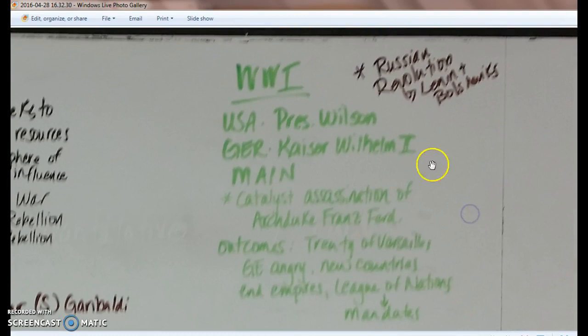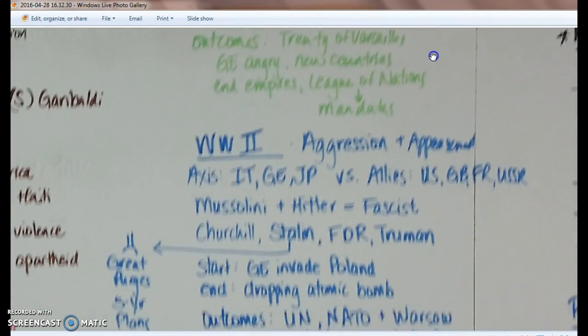World War I: U.S. President Wilson, Germany has Kaiser Wilhelm II. The catalyst is the assassination of Archduke Franz Ferdinand by Bosnian nationalists. Remember the outcomes of the Treaty of Versailles: Germany is angry — they lose land, lose their military, have to pay reparations, and take the blame for the war. New countries are created, empires are ended, and the League of Nations is placed in charge of mandates. The Russian Revolution also happens during World War I, with Lenin and the Bolsheviks leading it.